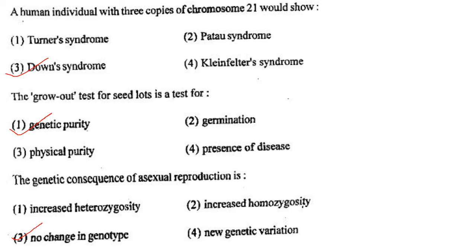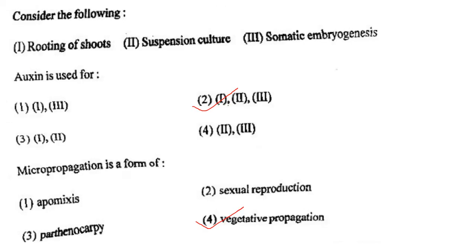Next one: The genetic consequence of asexual reproduction is option 1, increased heterozygosity; option 2, increased homozygosity; option 3, no change in genotype; option 4, new genetic variation. Answer is option 3: no change in genotype.